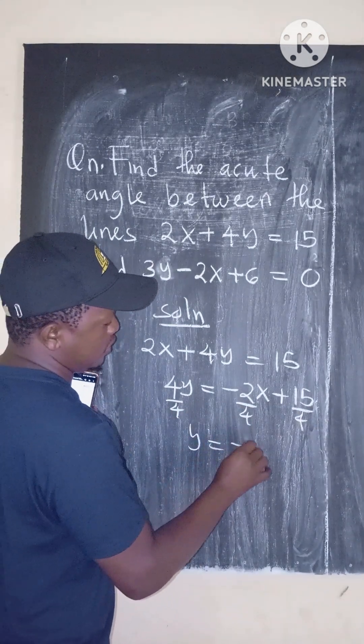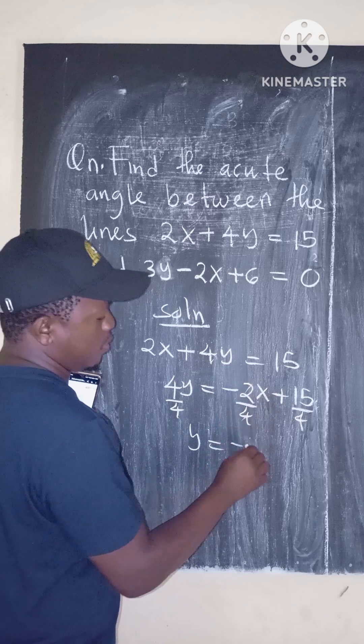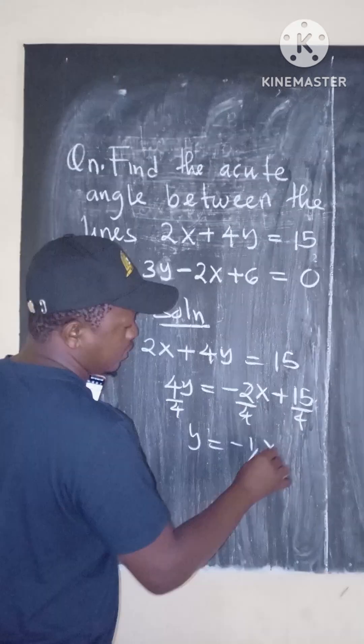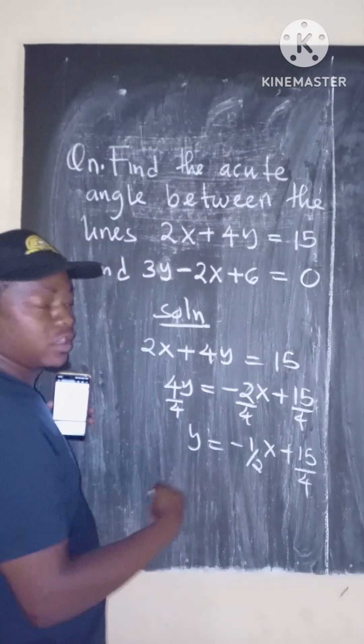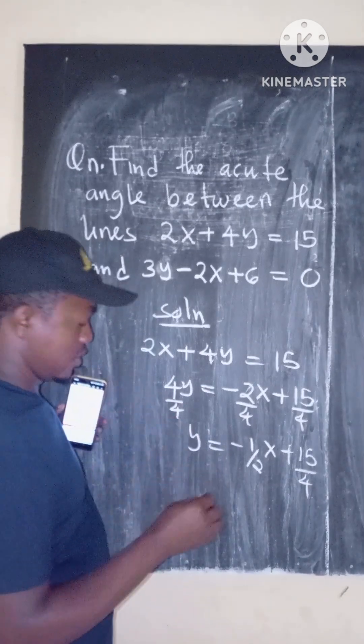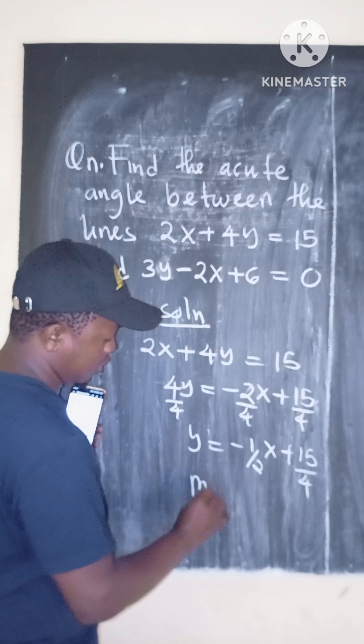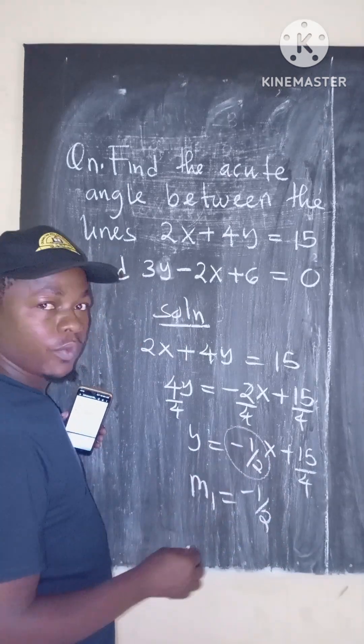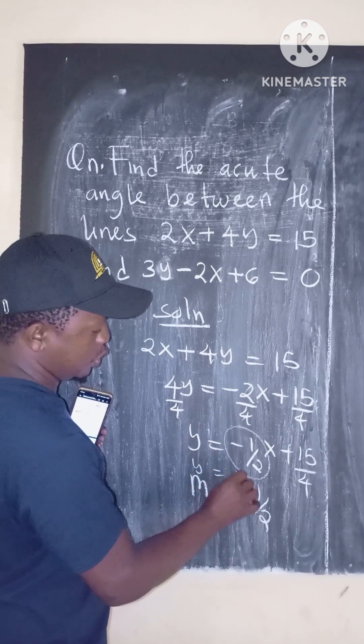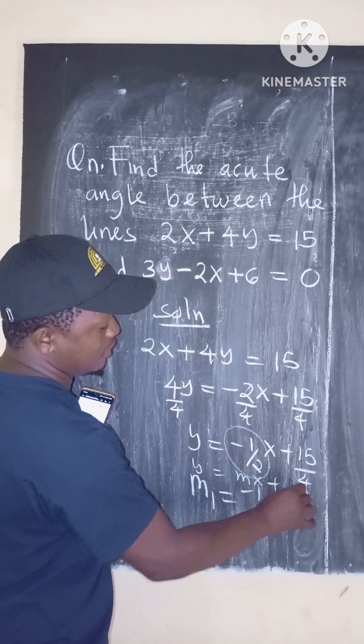The equation simplifies to y equals negative one-half x plus 15 over 4. We call this line 1. The slope m1 equals negative one-half. We compare with y equals mx plus c.